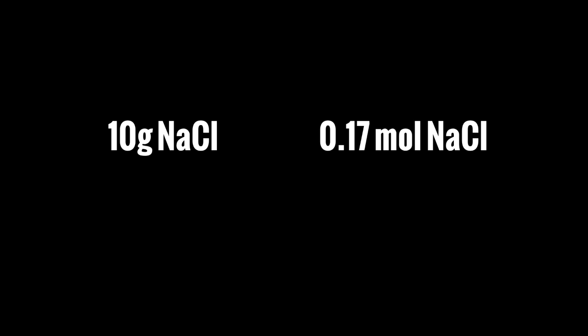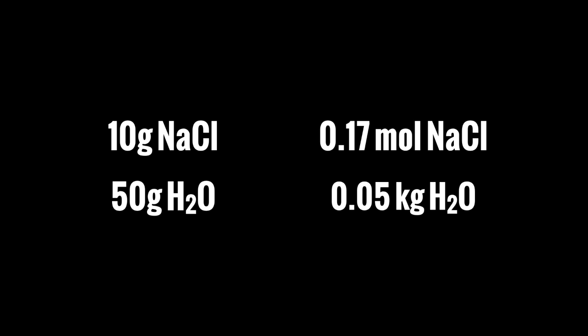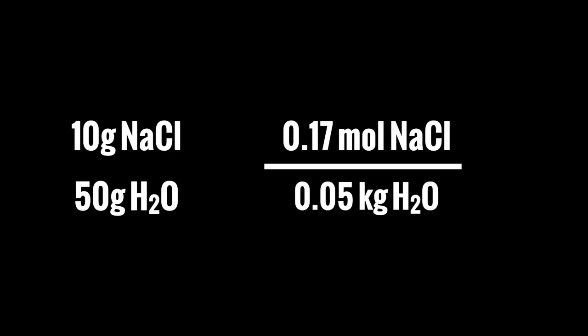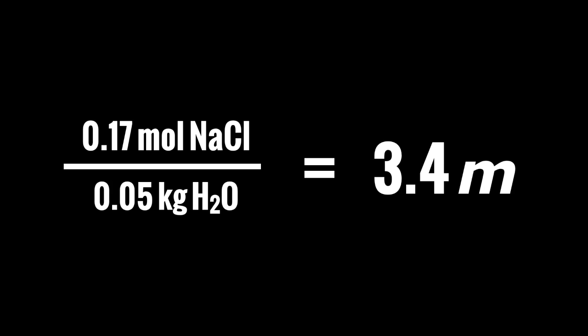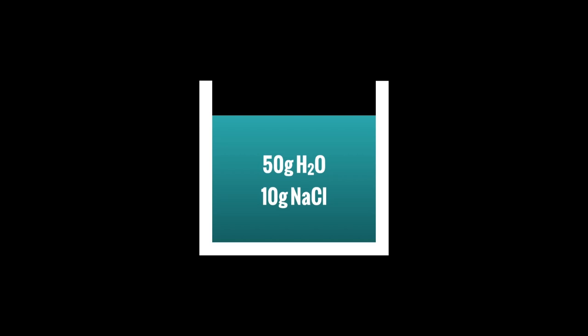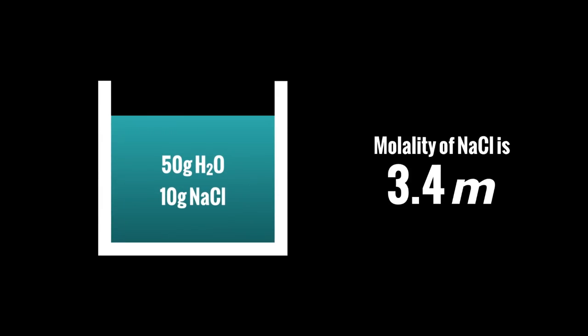With our original example: 10 grams of NaCl equals 0.17 moles of NaCl, and the solvent is 50 grams of H₂O. Molality is always measured in moles per kilogram, so the numerator must be in moles and the denominator in kilograms. Dividing, we get a molality of 3.4 m — shown with a lowercase italicized m. So for our original solution of 50 grams of H₂O and 10 grams of NaCl, the molality of NaCl is 3.4 m.